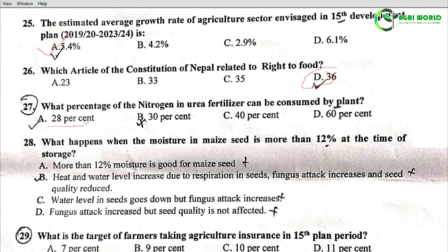Question 28: What happens when the moisture in maize seed is more than 12% at the time of storage? Option A: More than 12% moisture is good for maize seed. Option B: Heat and water level increases due to respiration in seed, fungus attack increases and seed quality is reduced. Option D: Fungus attack increases but seed quality is not affected. Option B is the correct answer: heat and water level increase due to respiration in seed, fungus attack increases and seed quality is reduced.